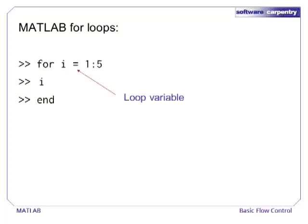In MATLAB, a for loop has the notation: for index equals array. In this case, the index is i, and the array is the vector 1, 2, 3, 4, 5, which has the shorthand 1:5 notation. The statements that are repeated each iteration through a for loop are called the body of the loop, and the end of the body is marked with the keyword end. The shorthand a:b returns a, a+1, a+2, up to b. Another way to say the same thing is that the mesh size is one. To change the mesh size, we can pass a:c:b, where c is the mesh size.